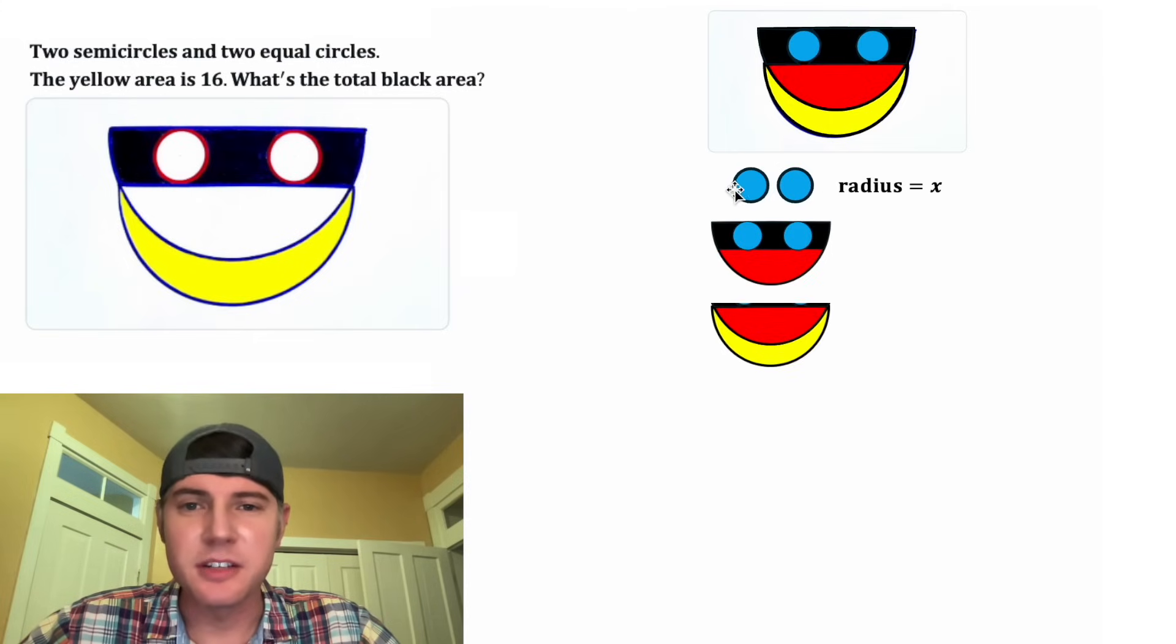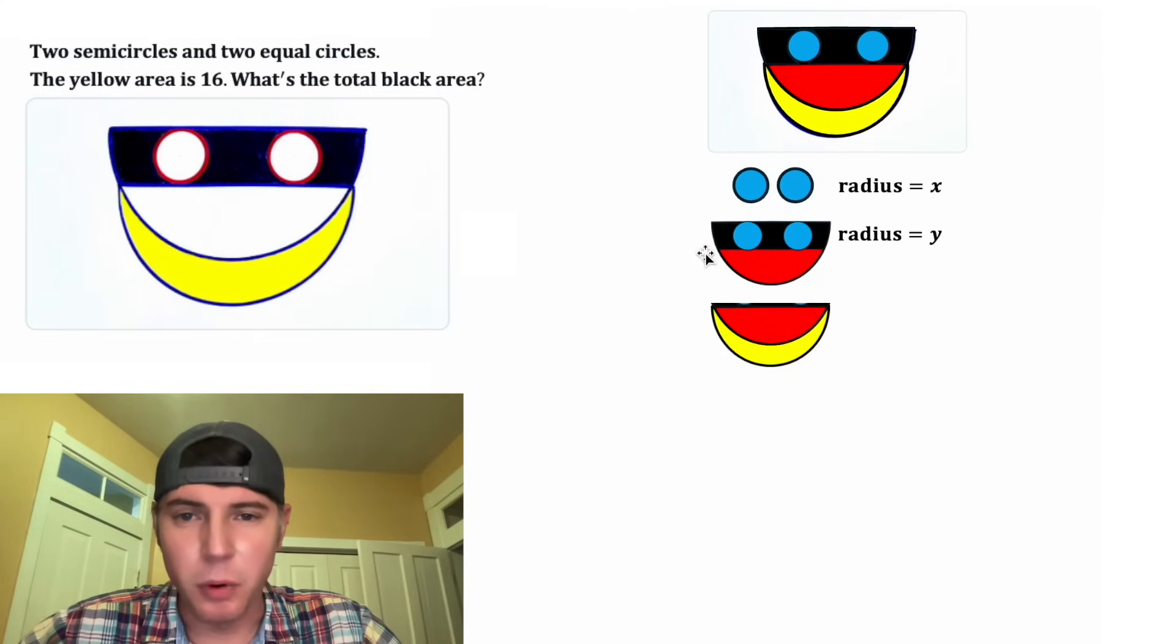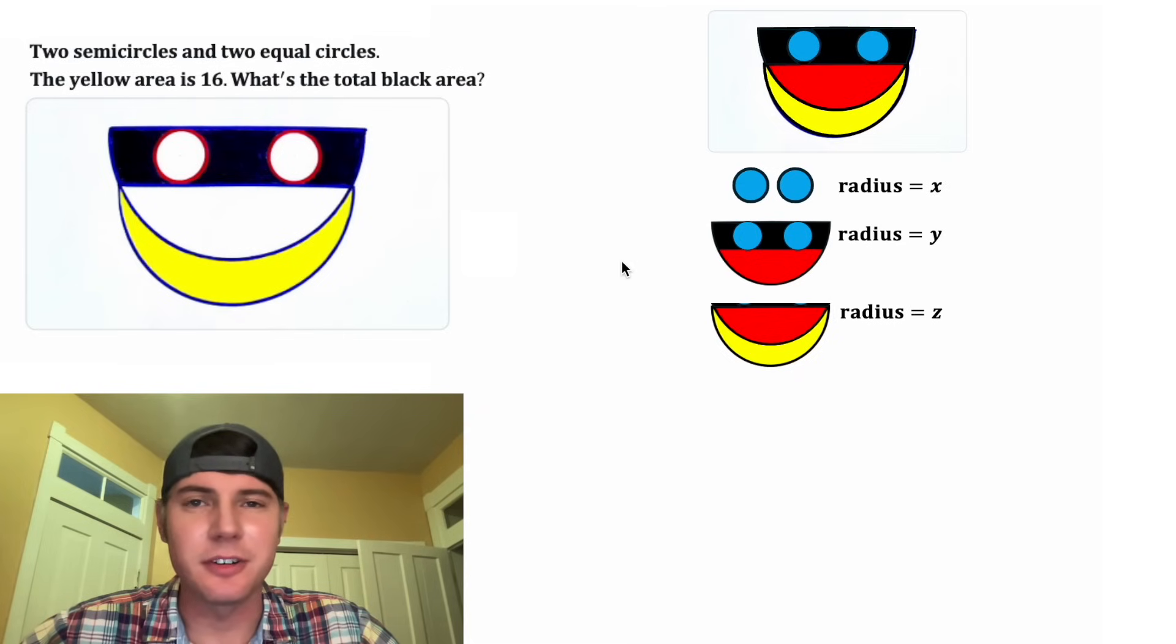Let's assign a radius of X for these circles. Let's assign a radius of Y for this semi-circle and a radius of Z for this semi-circle.